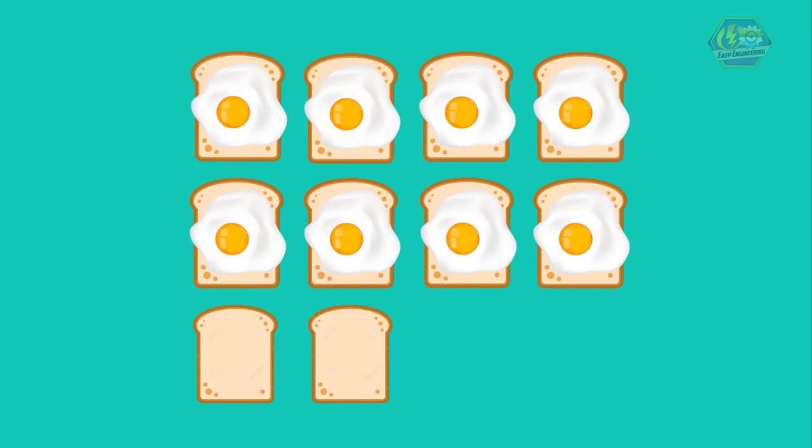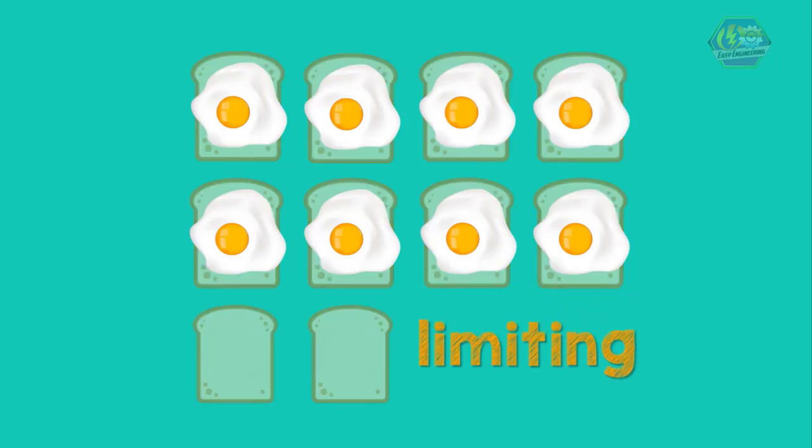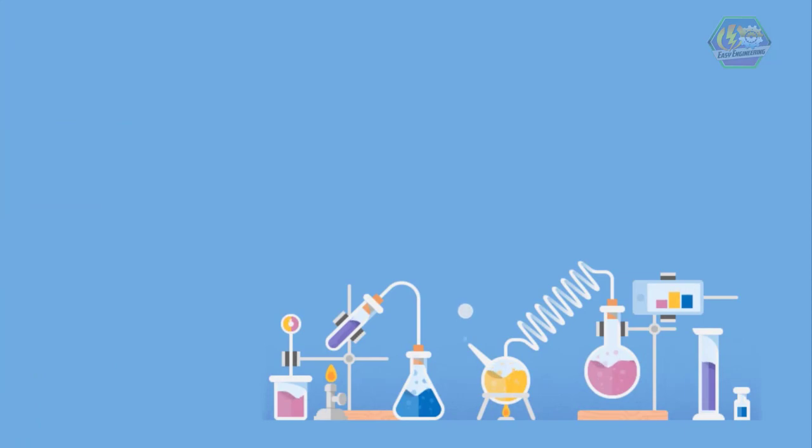Here our number of sandwiches is determined by the number of eggs we have. Hence we can say that the number of eggs is our limiting and the number of loaves is our excess. Limiting reactants are those reactants that determine the amount of products produced.